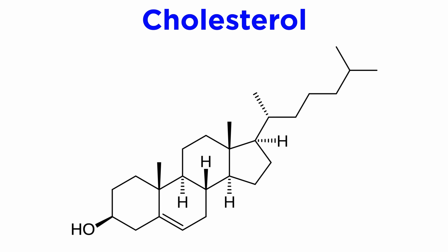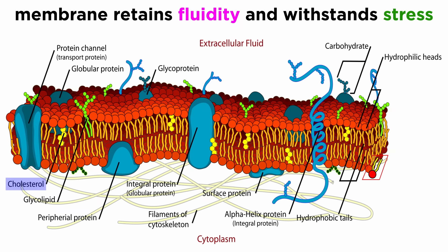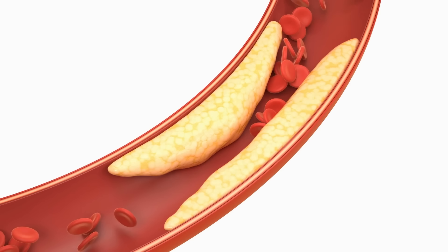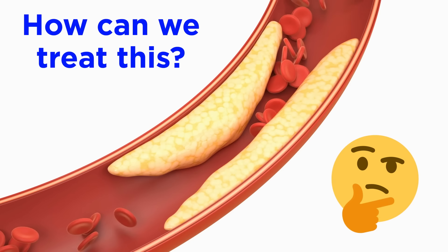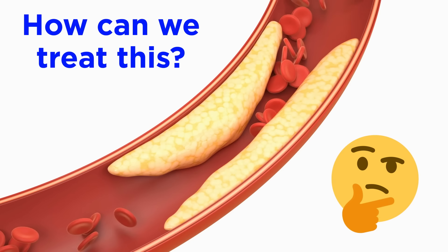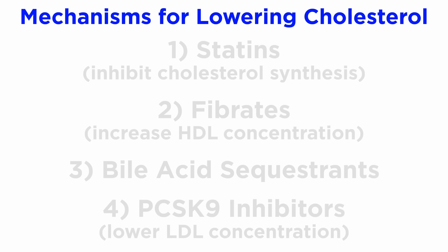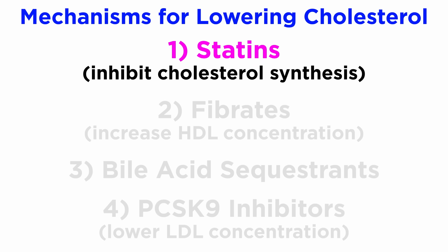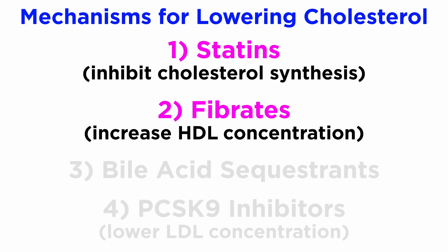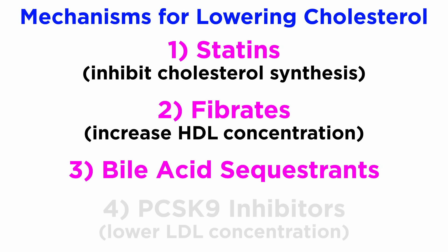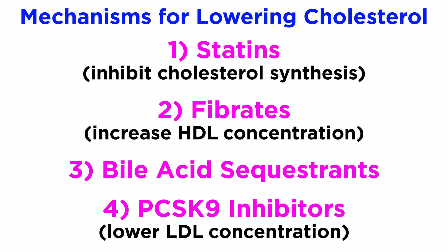Now we understand what cholesterol is, the essential functions it has, how it is transported via lipoproteins, and how this can lead to cardiovascular disease. Cholesterol is lowered pharmacologically by four primary mechanisms: one, inhibition of cholesterol synthesis through statins, which is by far the most common; two, fibrates, which aim to increase the levels of HDLs; three, bile acid sequestrants; and four, PCSK9 inhibitors, which aim to lower circulating LDL concentrations.